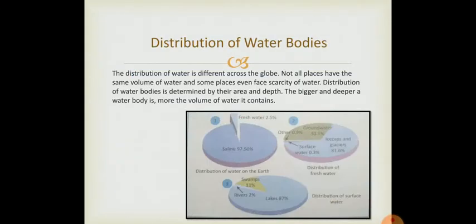Now, the next topic is distribution of water bodies. The distribution of water is different across the globe. Not all places have the same volume of water and some places even face scarcity of water. The best example is Chennai. Chennai is facing, in maximum places Chennai is facing scarcity of water. We people are very fortunate that we are getting water every day. We are getting water supply and more than enough water.